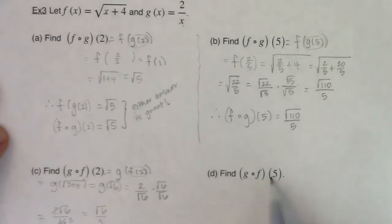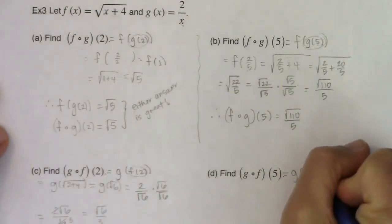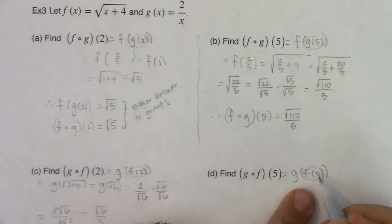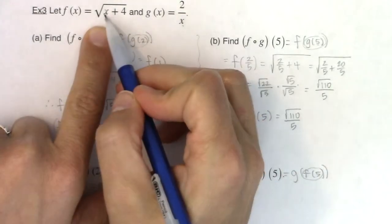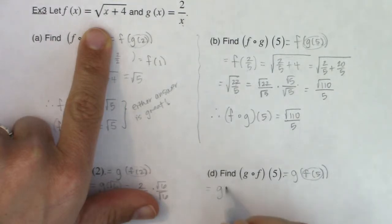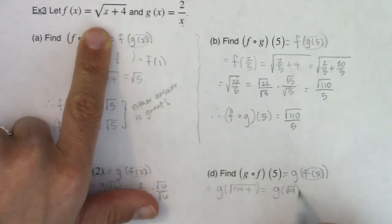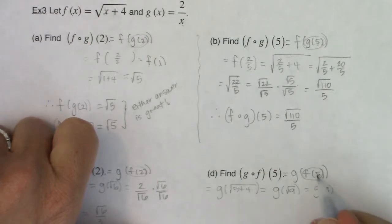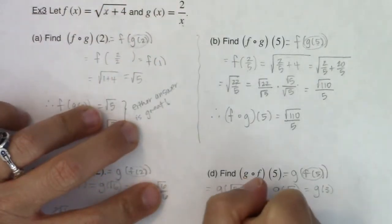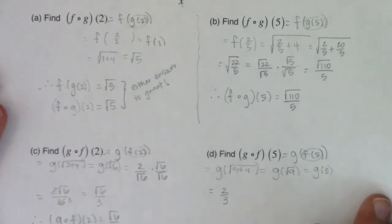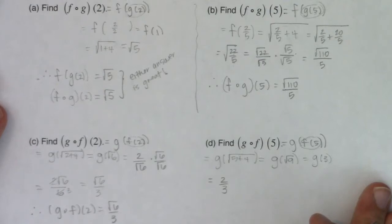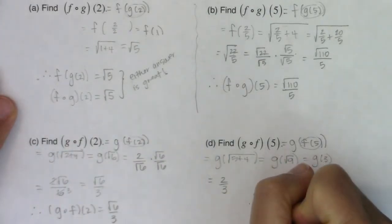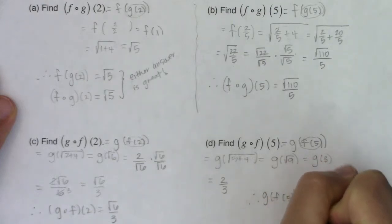Now let's do g of f of 5. The innermost function is f of 5, so put 5 into f: square root of 5 plus 4 is the square root of 9, which is 3. So g of f of 5 becomes g of 3. Plugging 3 into g of x gives 2 thirds — and that's the nicest option we have in these four parts, nothing to simplify. So g of f of 5 equals 2 thirds.